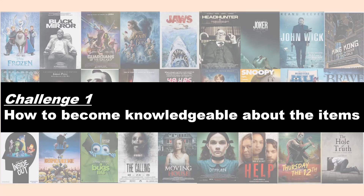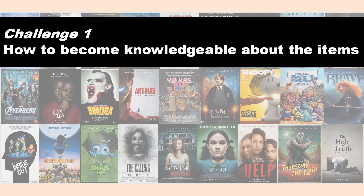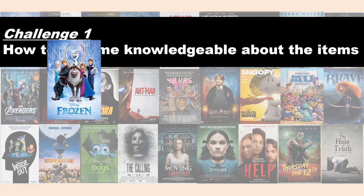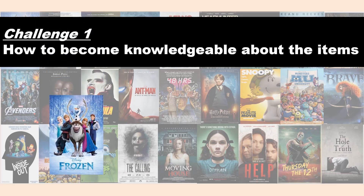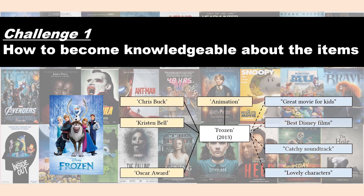Regarding Challenge 1, improving the accuracy of recommendations requires the system to capture the item's features mentioned in a dialogue. To do so, the recommendation module should be knowledgeable about the relationships between items and their various features. However, given the wide variety of features a single item can have, learning these relationships is a challenging task.